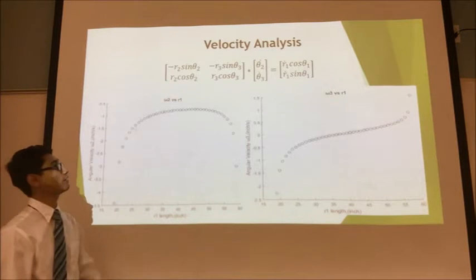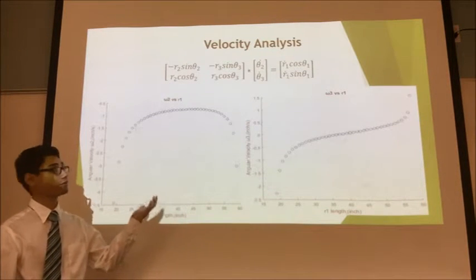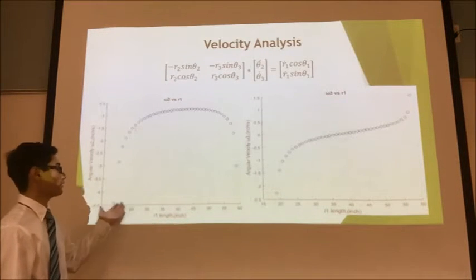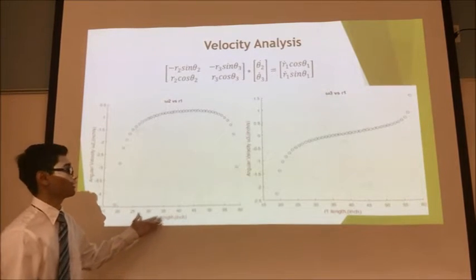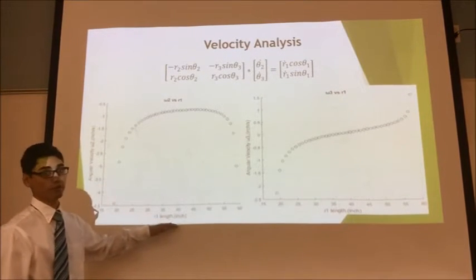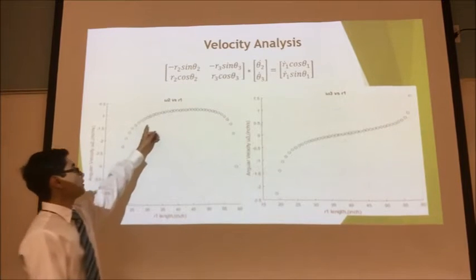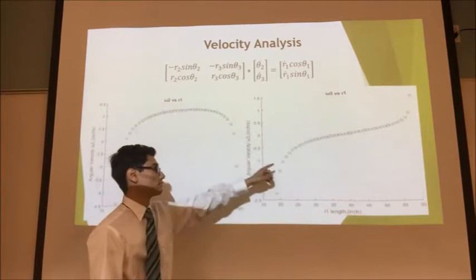The next part of our project is to conduct a velocity analysis of our outputs, which are theta 2 and theta 3. And right here, you can see a graph of theta 2 and theta 3's velocity as they're graphed over R1. As you can see, the velocity is constant.